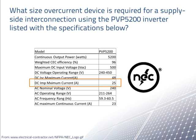Also, notice that the short circuit current we are given is for DC. In this case, we are concerned with the supply side interconnection, which means the AC side.